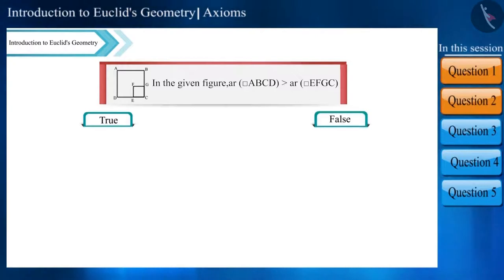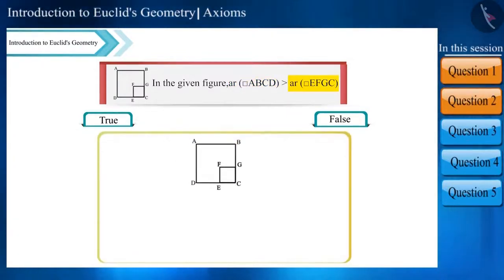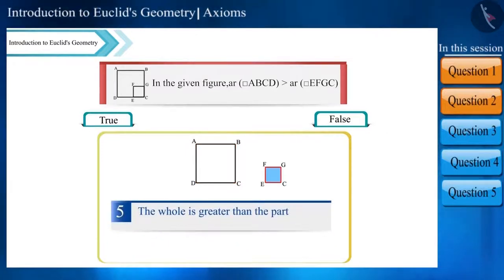Is this statement true? The area of square ABCD is more than the area of square EFGC. From the figure we are finding that square EFGC is a part of square ABCD. By looking at the figures and according to Euclid's fifth axiom, we know that the whole is greater than its part. Therefore, this statement is true.